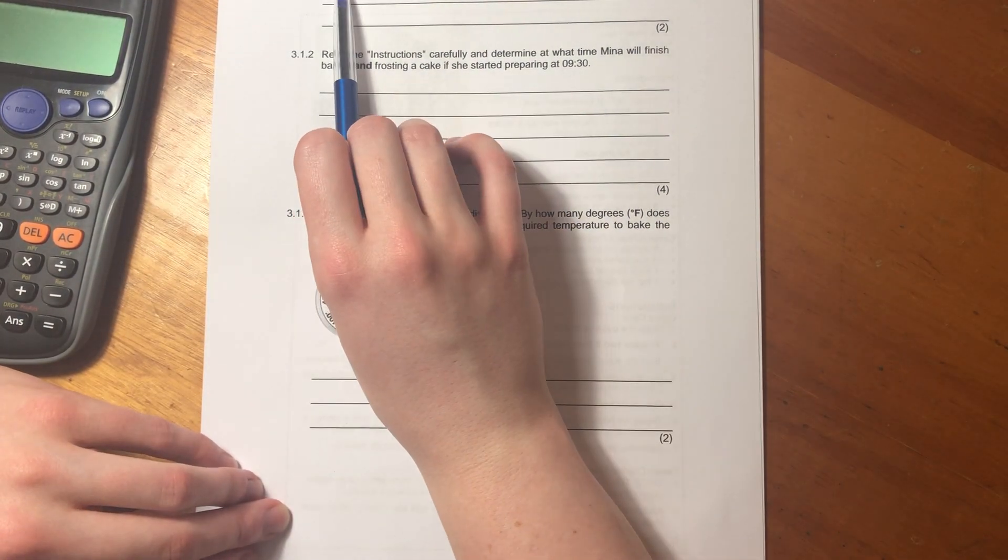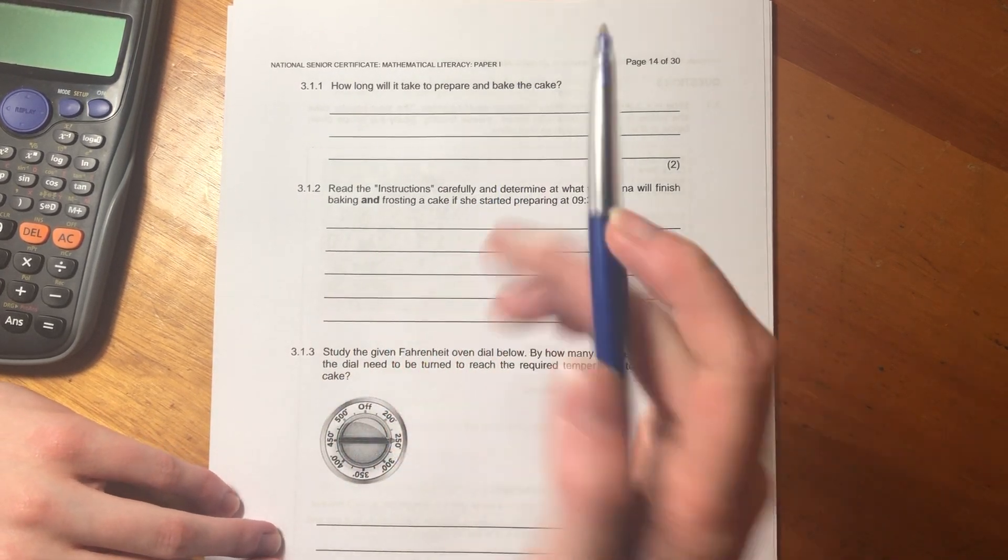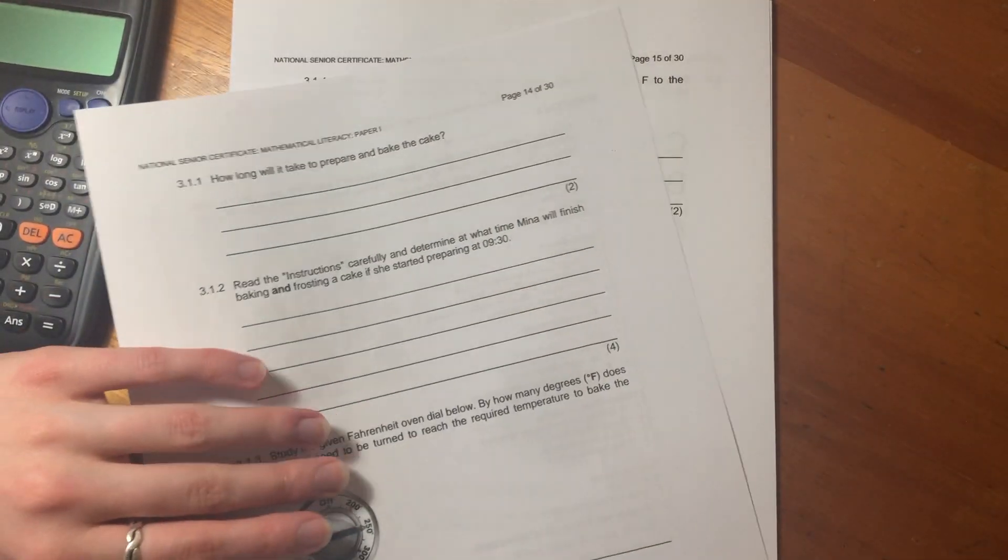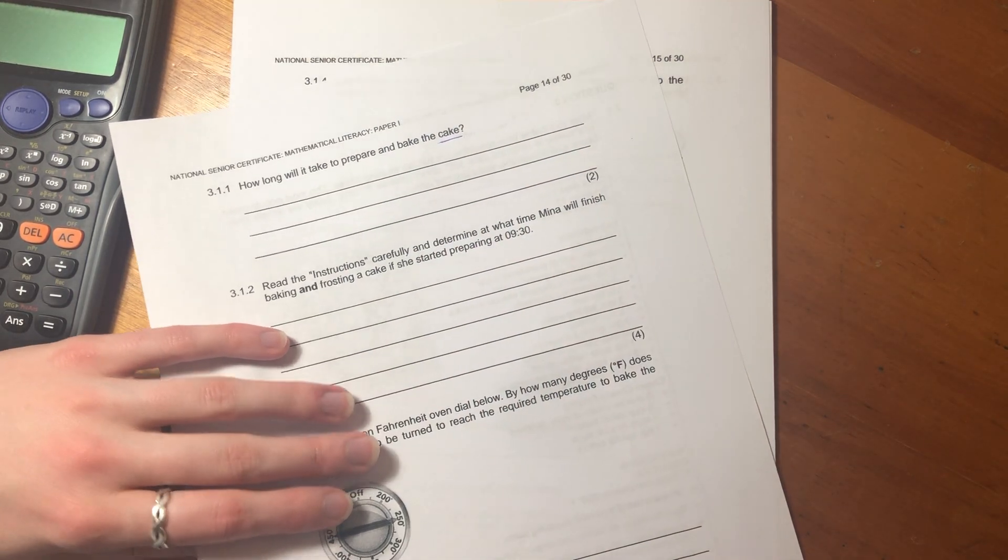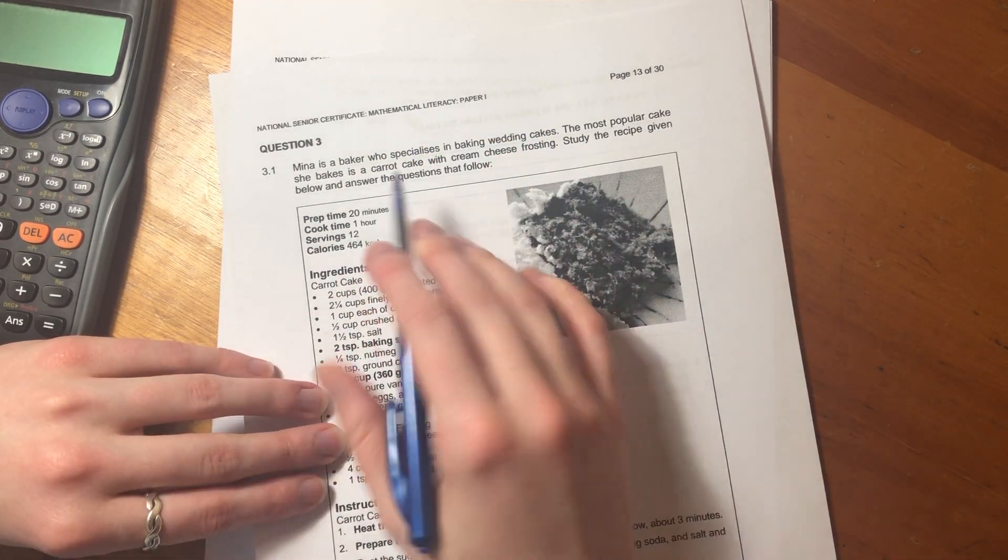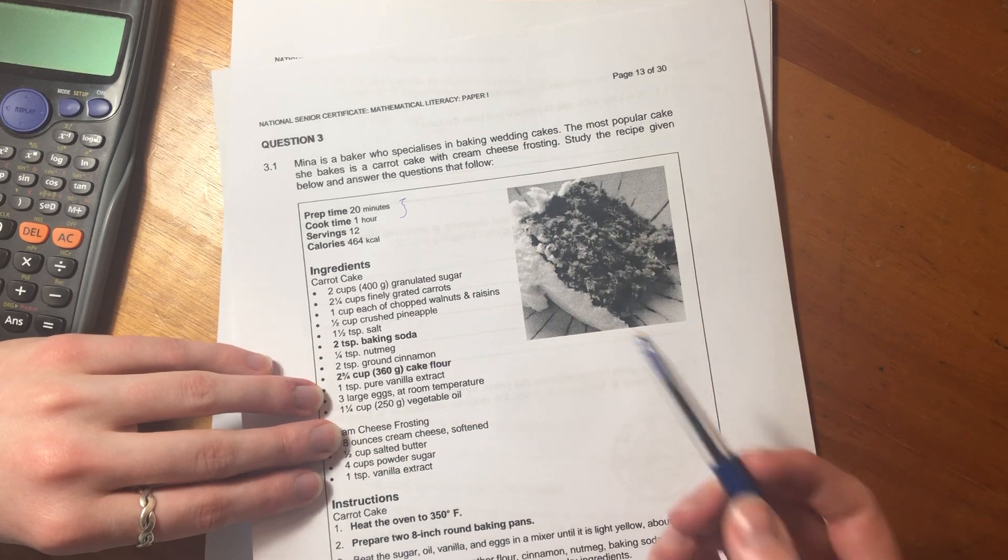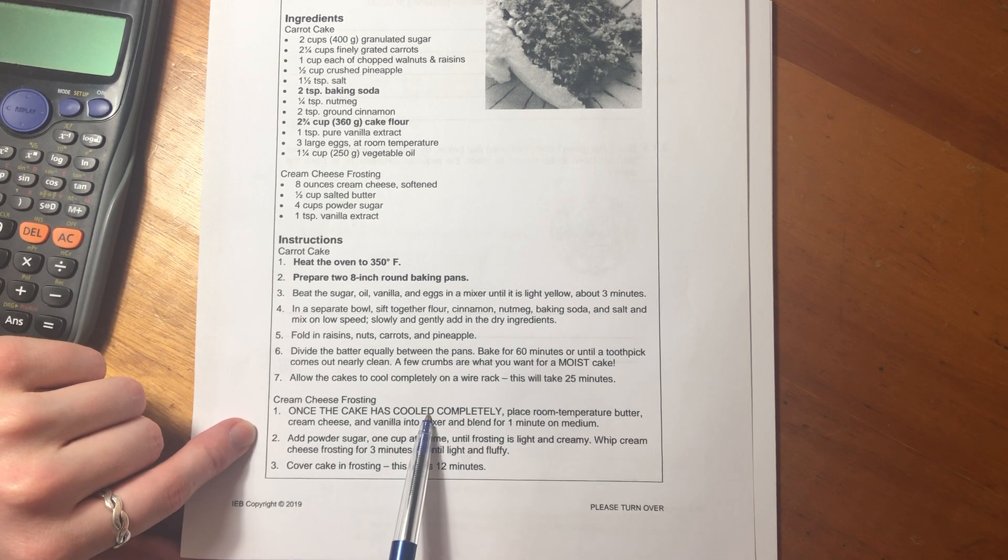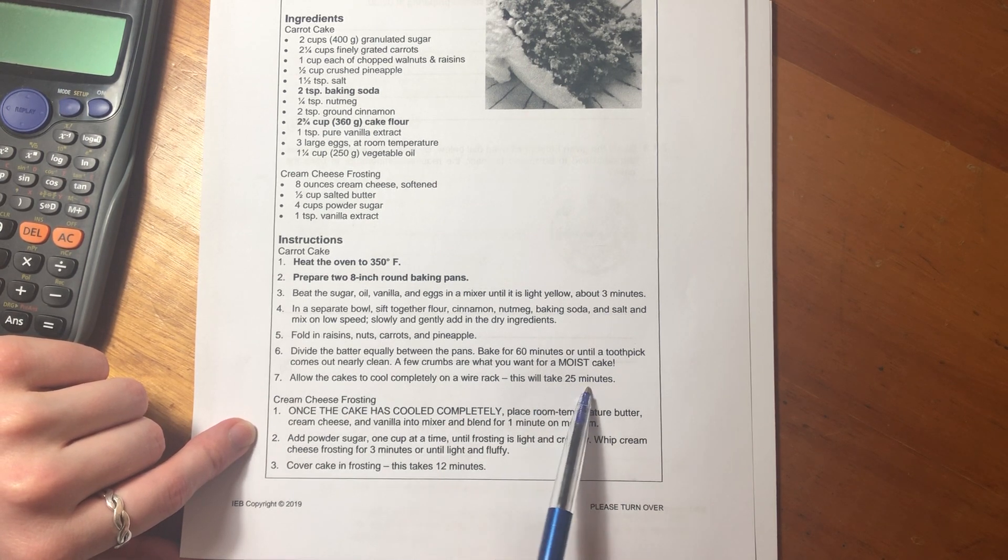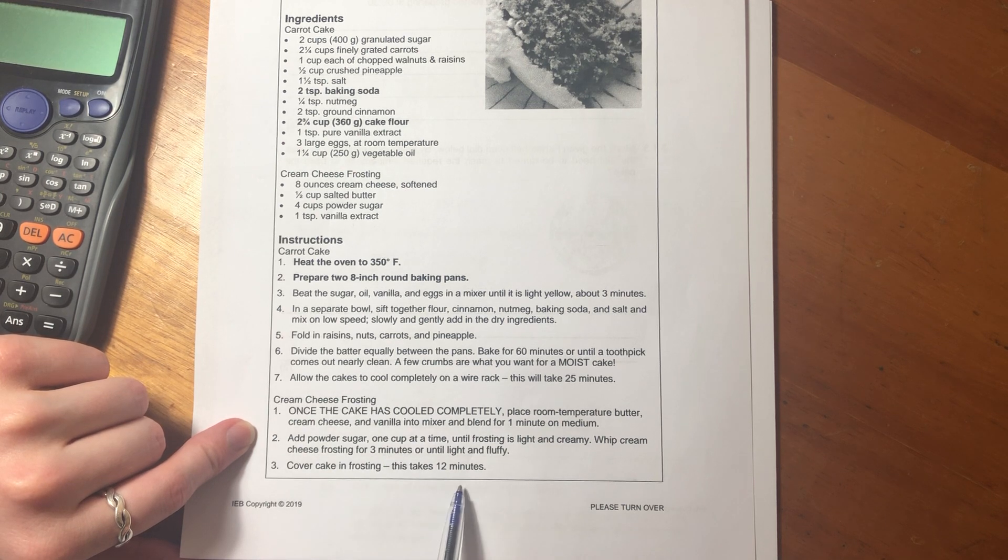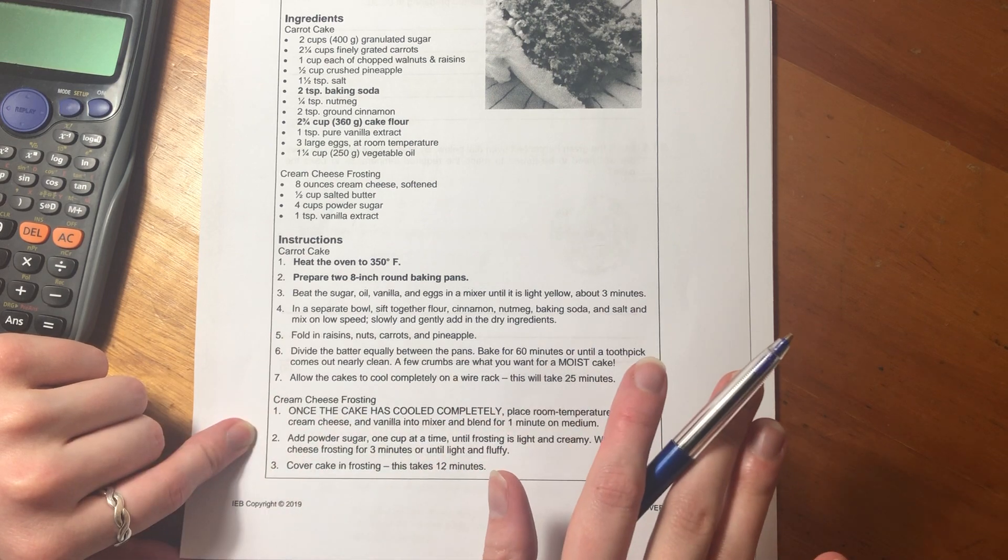Let's jump into the questions. It says how long will it take to prepare and bake the cake? What's important is it's just talking about the cake. It's not talking about the frosting. So we know the prep time is 20 minutes and the cook time is one hour. But we're not including any of these times around the frosting because it says that we must leave it to cool.